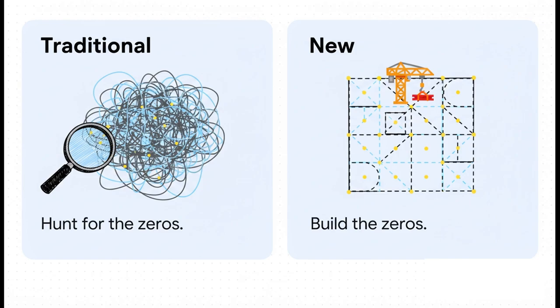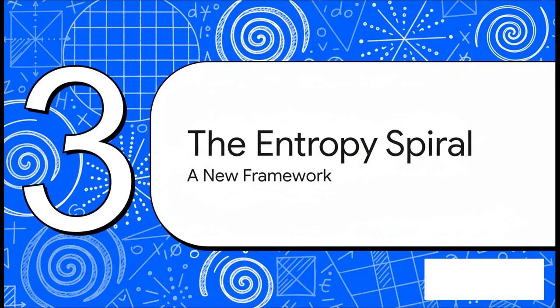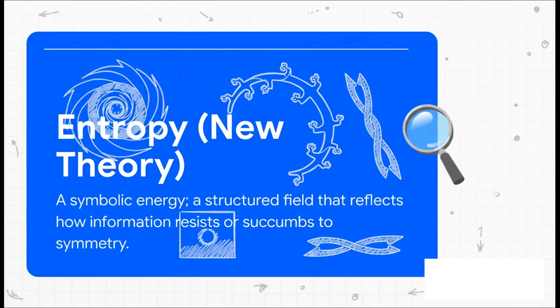And this new way of thinking has a name: the entropy spiral. It's a total reimagining of the problem. It actually borrows ideas from physics and information theory to define these three geometric forces that it claims are behind the whole thing. First, we have to kind of rewire our brains about a word we think we know.